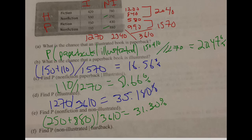The last one says probability of non-illustrated given hardback. So I've got my hardback here, which is going to be a total of 2040. So that's what I am going to divide by. So I do over 2040. And then my non-illustrated. I've got non-illustrated here and here for the 2040. So I need to add 780 and 250. So I do 780 plus 250. I'm going to throw it in parenthesis. That gives me 50.49%.